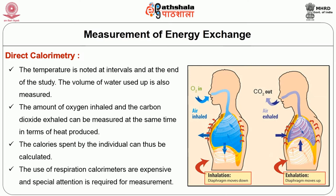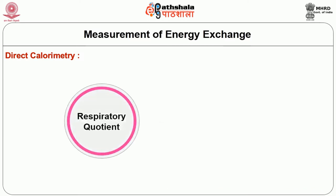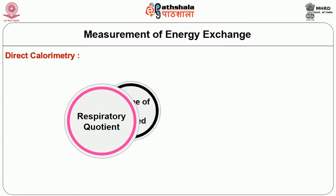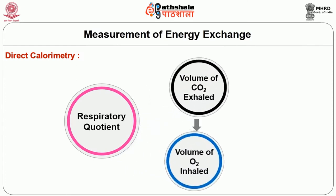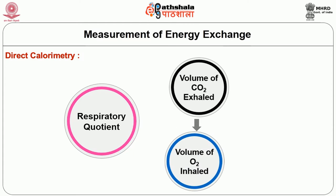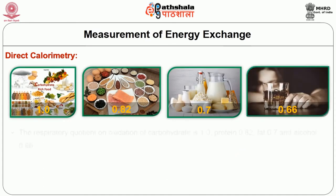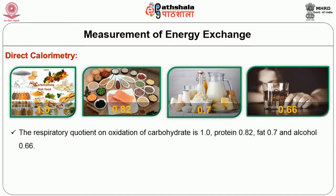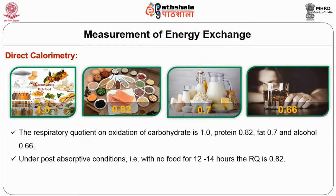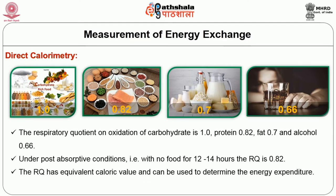Respiration calorimeters are expensive and require special attention for measurement. Respiratory quotient is defined as the ratio of volume of carbon dioxide exhaled to volume of oxygen inhaled on oxidation of a given nutrient. The respiratory quotient on oxidation of carbohydrate is 1, for protein 0.82, fat 0.7, and alcohol 0.66. Under post-absorptive conditions, with no food for 12 to 14 hours, the respiratory quotient is 0.82. The respiratory quotient has an equivalent caloric value and can be used to determine energy expenditure.